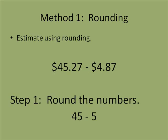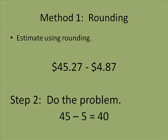The first step in doing a problem like this with rounding is simply rounding. I'm going to round to the nearest ones. I end up with 45 and 5 and I replace the two original numbers with my new rounded numbers. The second step, do the problem. 45 take away 5 is 40.